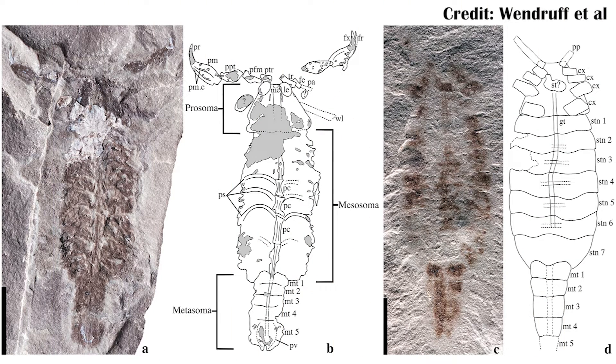Parioscorpio was described last year as the earliest scorpion to have been found in the fossil record. But that may not actually be the case, at least according to one new paper.